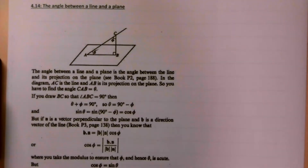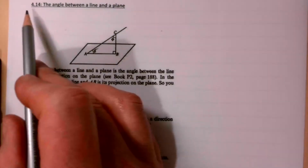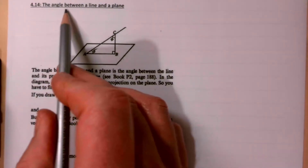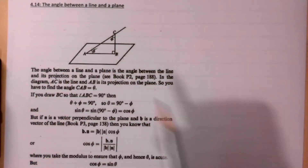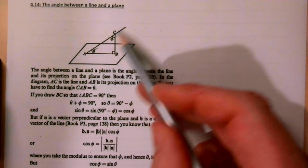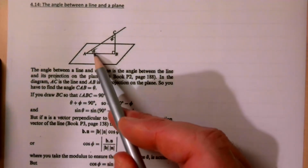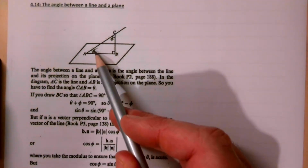This is AS Further Pure Maths, Unit 4 Vectors, topic 4.14: the angle between a line and a plane. Here's our line and here's our plane — we're trying to find that angle theta.